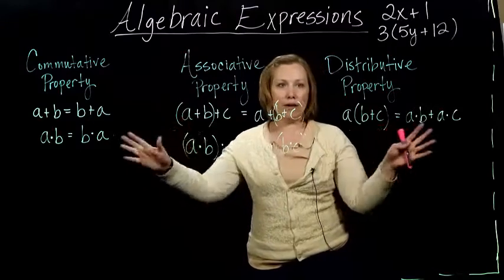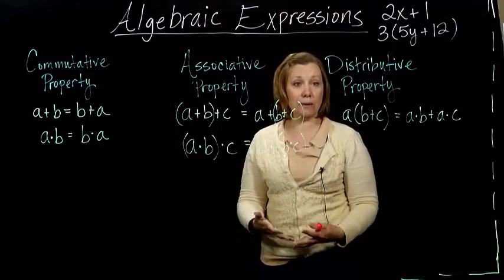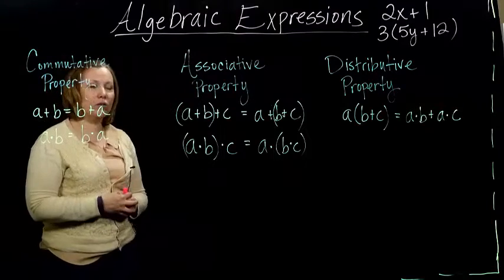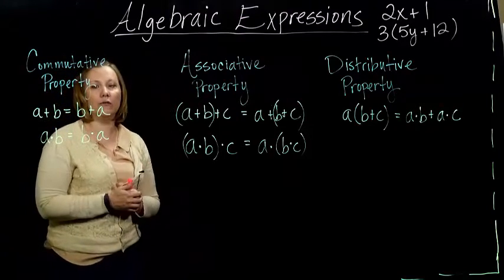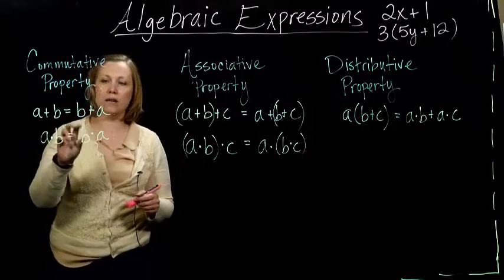And they look, I've got them up here, they look a little scary. But I think if we think about them in terms of actual numbers, they'll make a little more sense to you. So the first property that we can use that all numbers follow is called the commutative property.